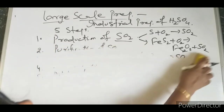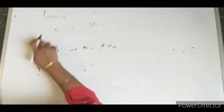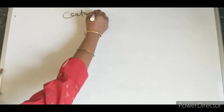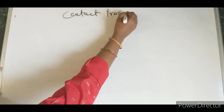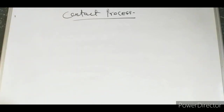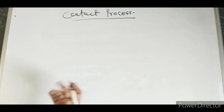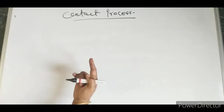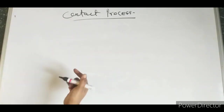One important thing: the name of this process is the Contact Process. For ammonia it is the Haber Process, for HCl it is the inverted funnel arrangement, for HNO3 it is the Ostwald Process, and for sulfuric acid it is the Contact Process.